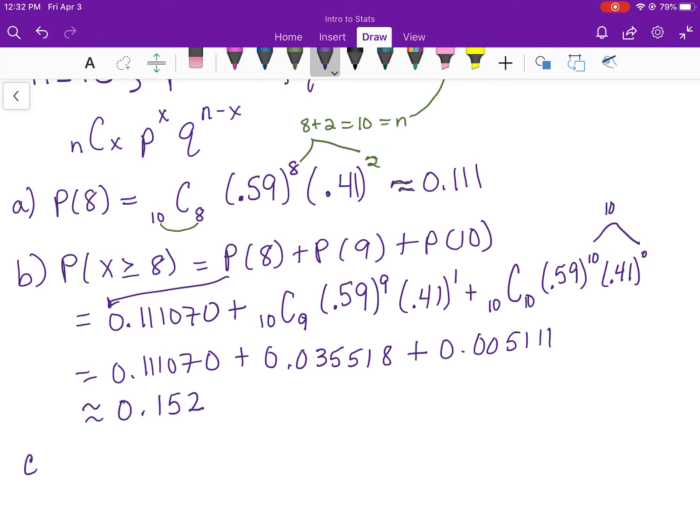Part C: it says less than 8. Now these two events right here are complements. Greater than or equal to 8 is exactly the opposite event of less than 8. Complements have to add to 1.